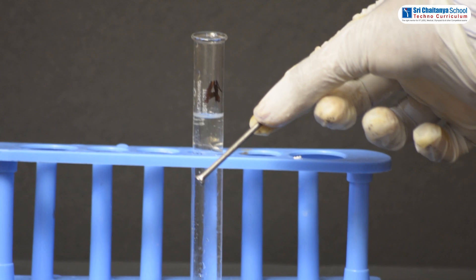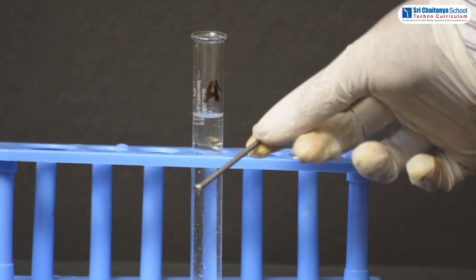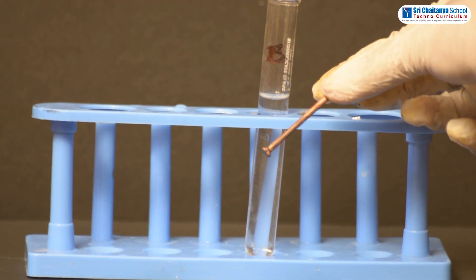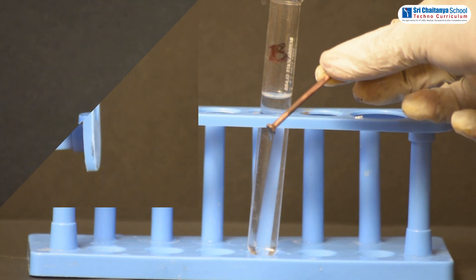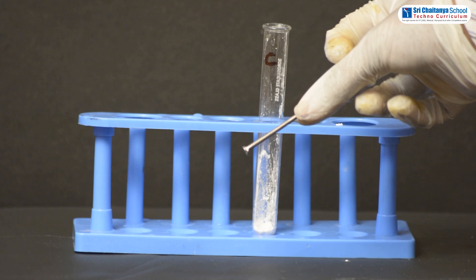In test tube A, iron nail does not rust. In test tube B, iron nail rusts. In test tube C, iron nail does not rust.